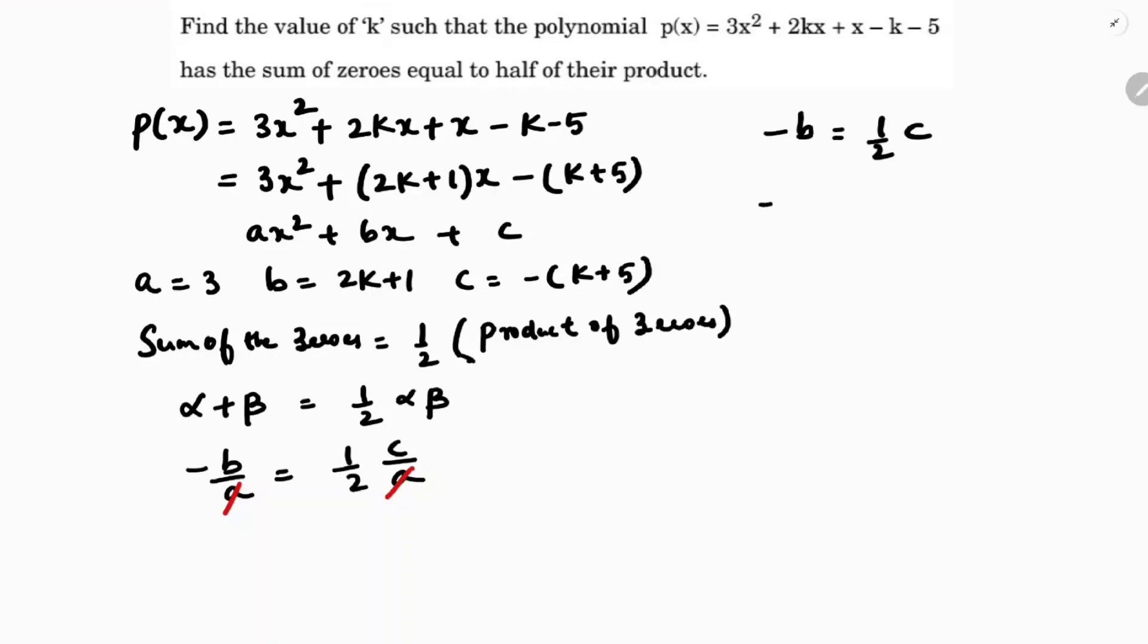So -b, where b is 2k+1, equals half of c, where c is -(k+5). The minus signs cancel. Cross multiplying...